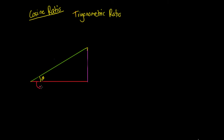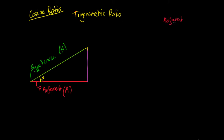So if we remember, we have this adjacent side here — it was our adjacent side because it was next to our angle theta. And then we had our hypotenuse; this green side was our hypotenuse because it was our longest side. I'm going to call my hypotenuse H and my adjacent side A. The cosine ratio says that our adjacent side divided by our hypotenuse forms a certain ratio, and we can use that ratio to work out what we call the cosine of an angle theta.